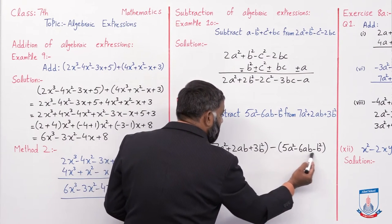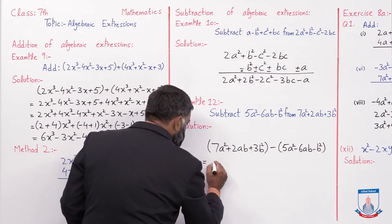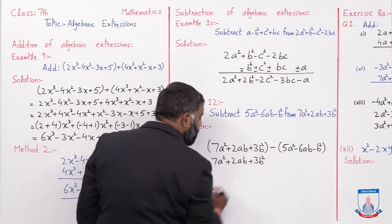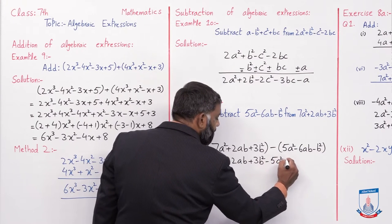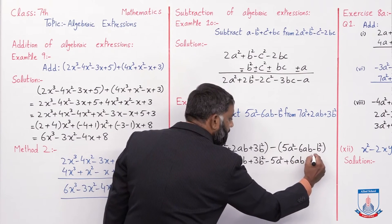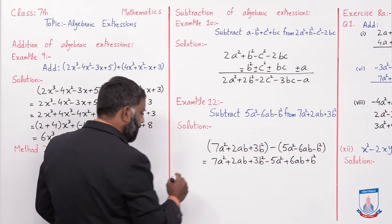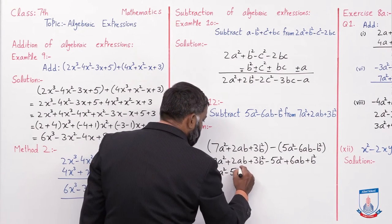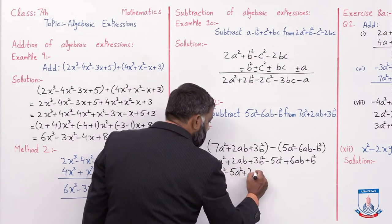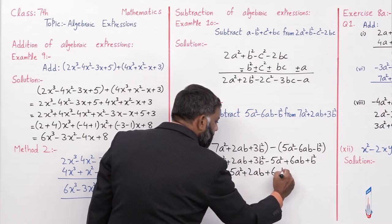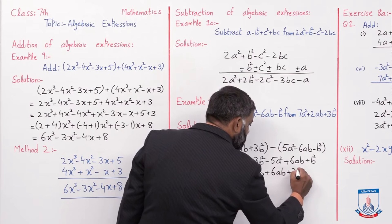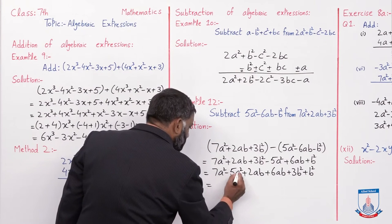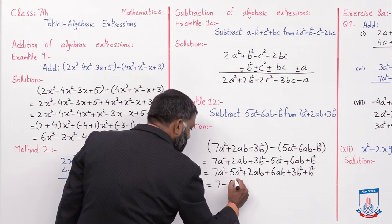Pehle step mein bracket ke bahar minus ka sign hai, to brackets open karenge, tamam terms ke signs change ho jaenge. To aajega: 7a² + 2ab + 3b² - 5a² + 6ab + b². Ab like terms ko ekattha karenge: 7a² - 5a², then 2ab + 6ab, then 3b² + b². In dono terms mein a² common aa gaya, remaining: 7 - 5.